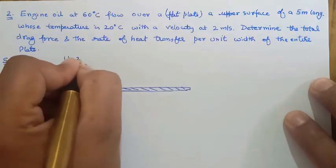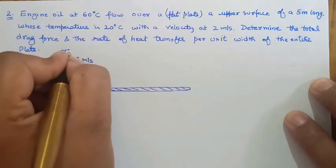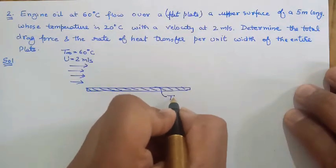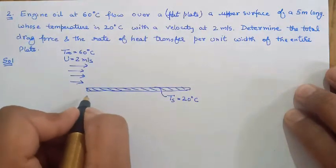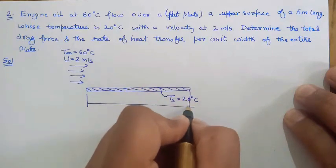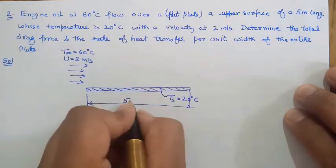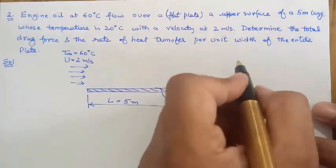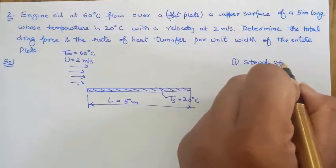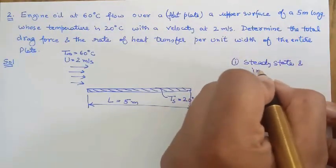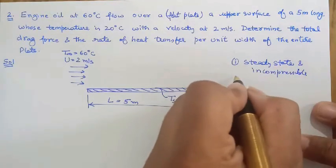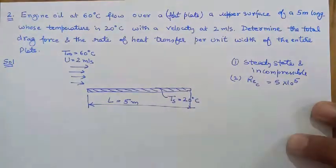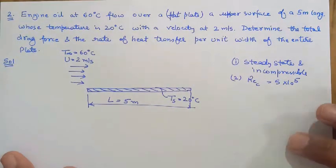The setup has velocity 2 meter per second, flow temperature 60 degree centigrade, surface temperature 20 degree centigrade, and flat plate length 5 meters. Assumptions: steady state conditions, incompressible fluid, and critical Reynolds number equals 5 times 10 raised to power 5. The mean film temperature is Ts plus T-infinity divided by 2, which is 20 plus 60 divided by 2, giving 40 degree centigrade.